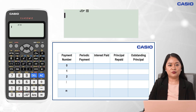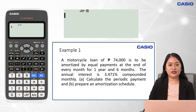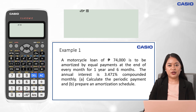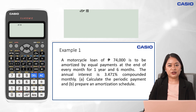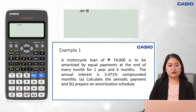Here is a format of an amortization schedule that you can use. For example, in this problem, the given are: present value of 74,000 pesos, period of time of 1.5 years, number of conversion periods per year of 12 — since the payment is to be made every end of the month, that is 12 times a year — and an interest rate of 3.471%.